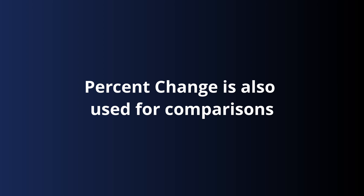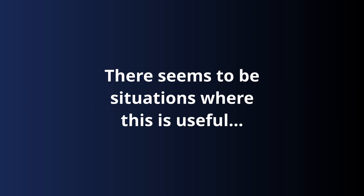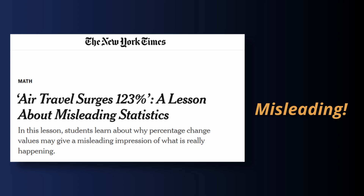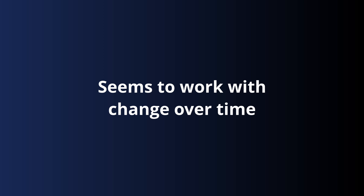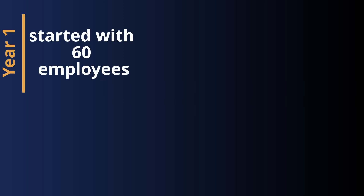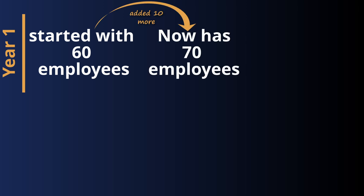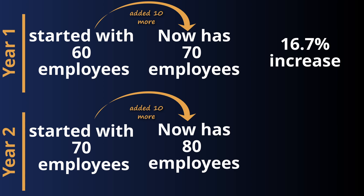Percent change is also used for comparisons. There seem to be situations where this is useful and situations where it can be misleading. The examples I see usually use it to compare changes over time. For example, a company had 60 employees and over the course of the year they added 10 more — that's a 16.7 percent increase. Then the next year, if they added only 10 more employees again, going from 70 to 80, it would only be a 14.3 percent increase for that year.